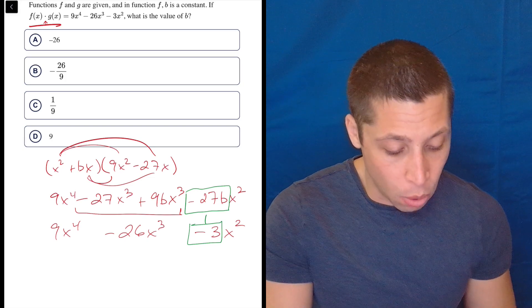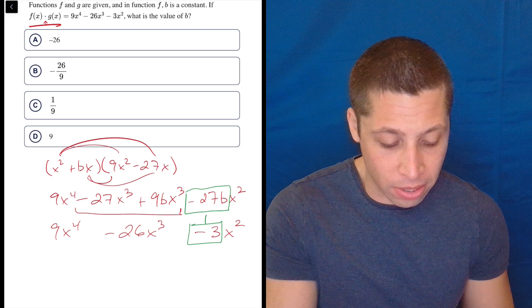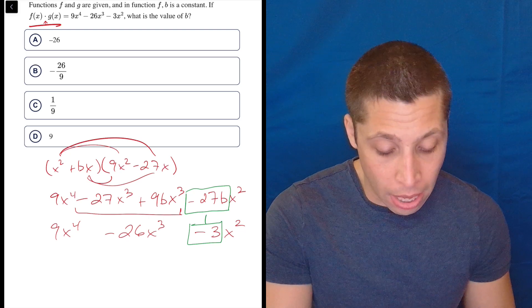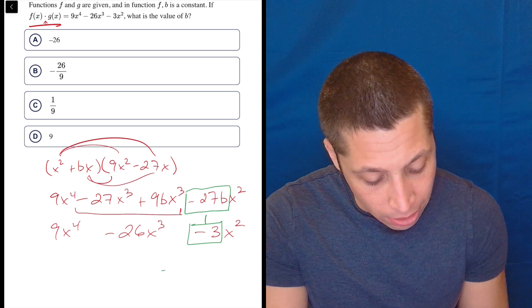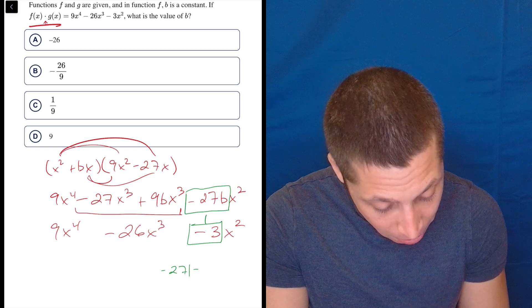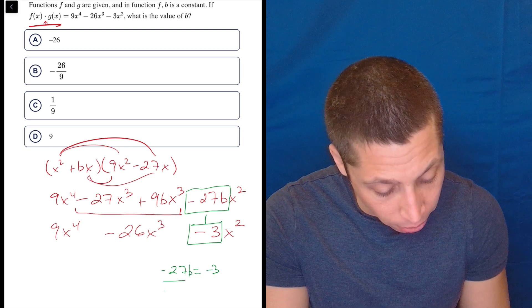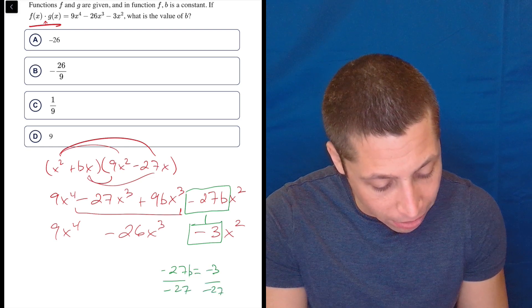So now you could just look at the choices. What times negative 27 is going to give us b? It's definitely going to be a fraction. So that's probably c, but we can even solve negative 27b equals negative 3, divide by negative 27, divide by negative 27.